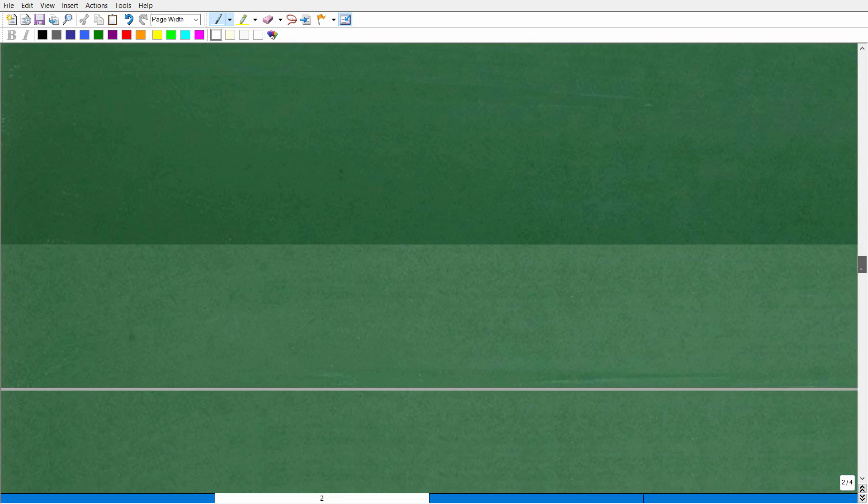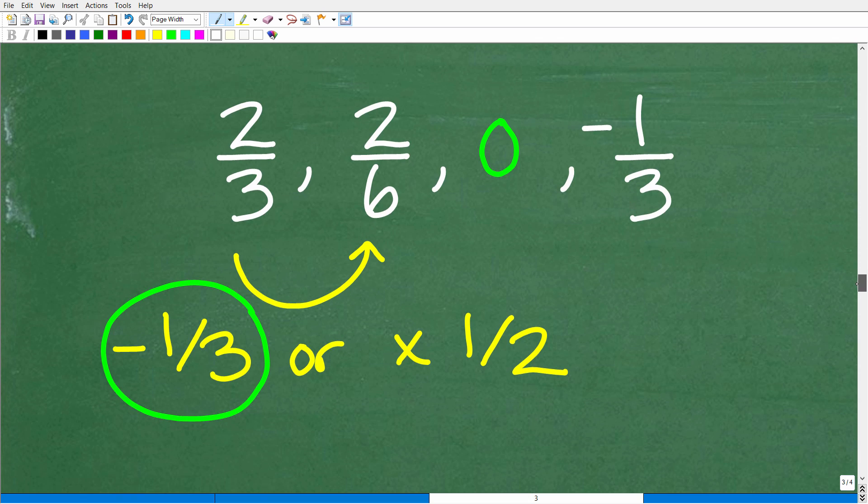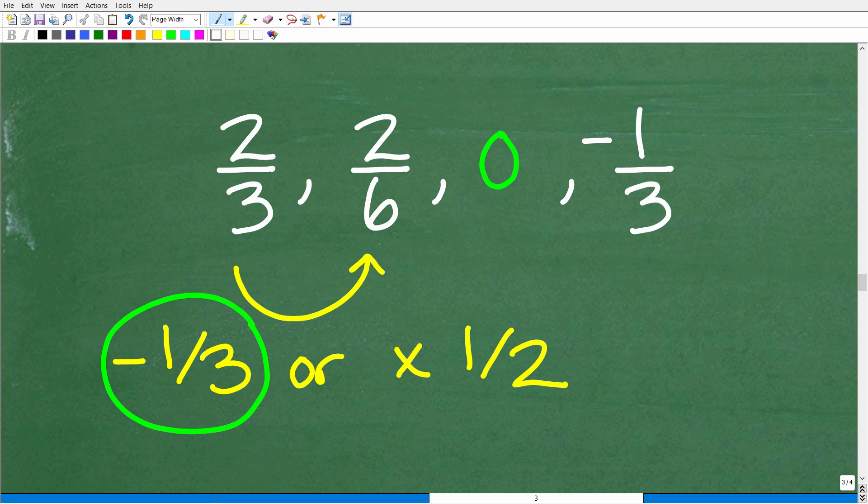All right. So let's go ahead and get back to the problem. And really what we need to do is test this negative one-third to see if this works out. All right. So if we know if we take two-thirds and subtract a one-third, we do get to a two-sixths, which, of course, is the same thing as a fraction one-third.